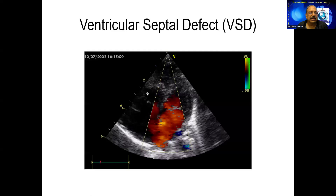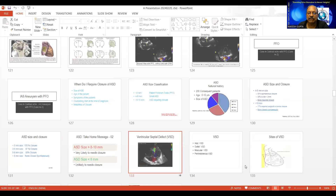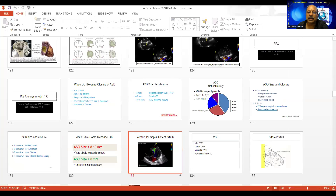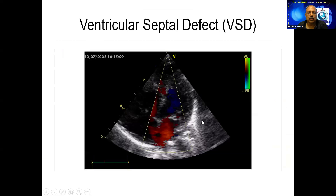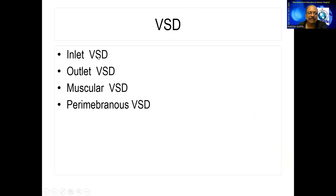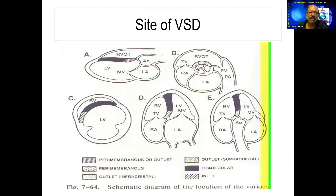From ASD to VSD — we look at various VSDs based on location. We call them inlet VSD, outlet VSD, muscular VSD, and perimembranous VSD. For evaluation, we need multiple windows: apical four-chamber view, apical five-chamber view, parasternal long-axis view, and parasternal short-axis view.